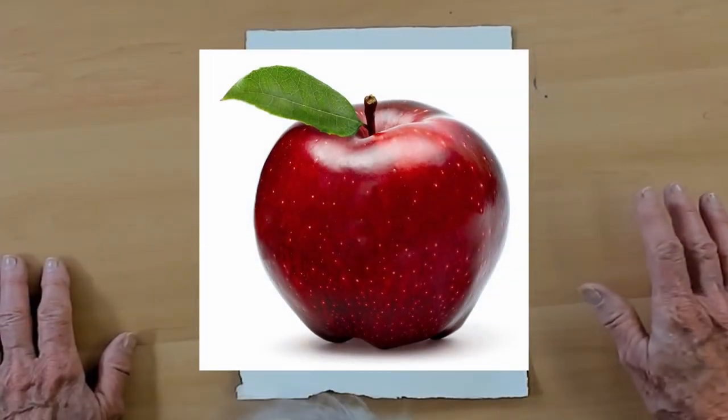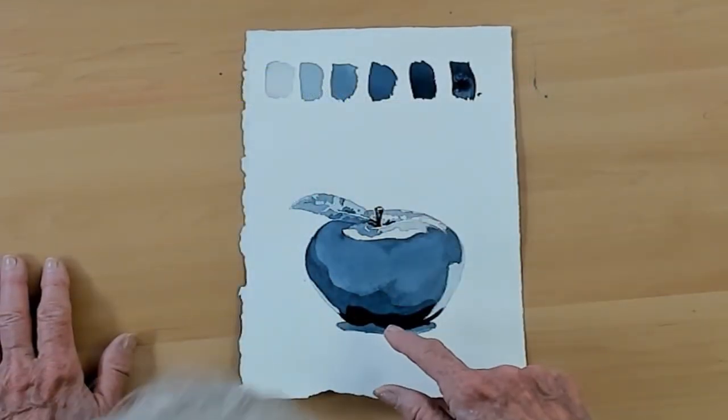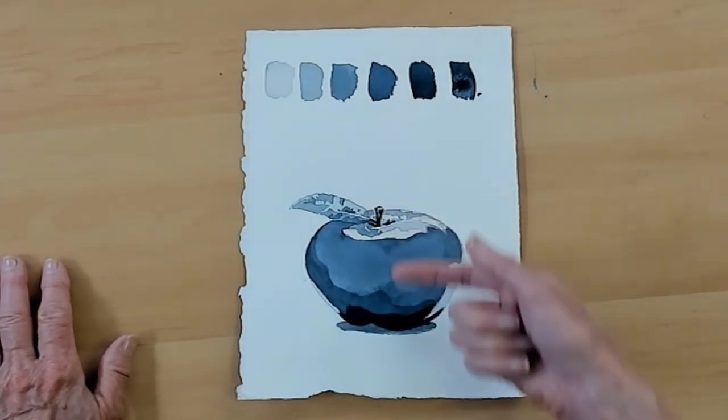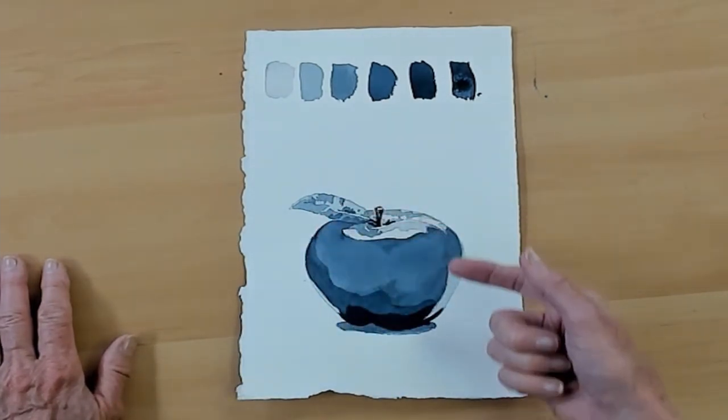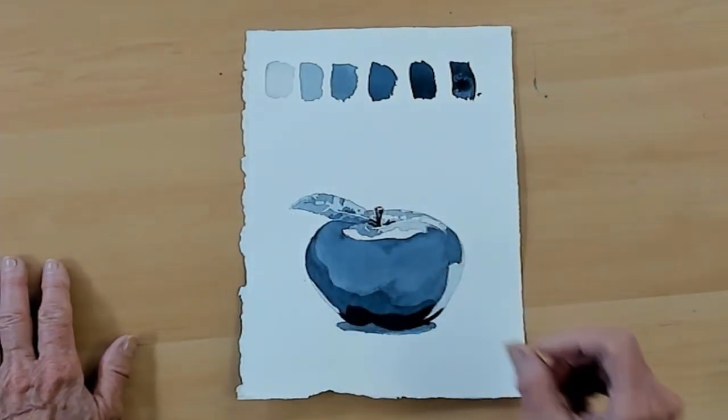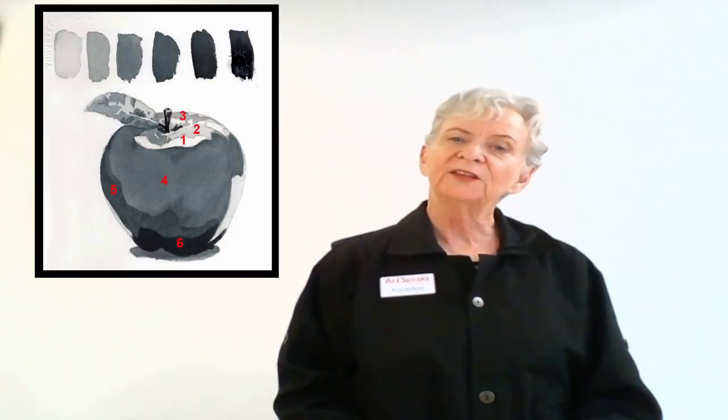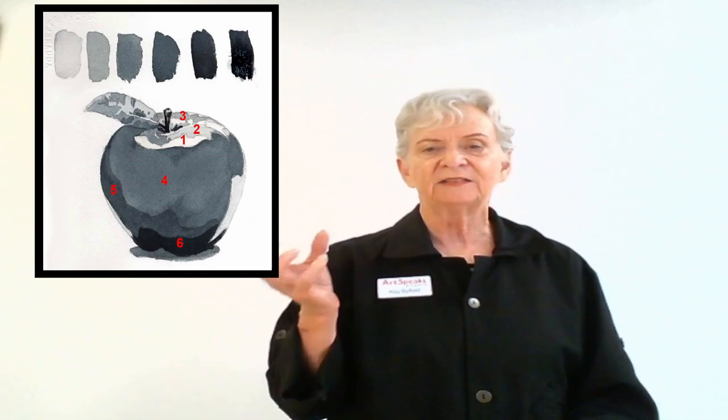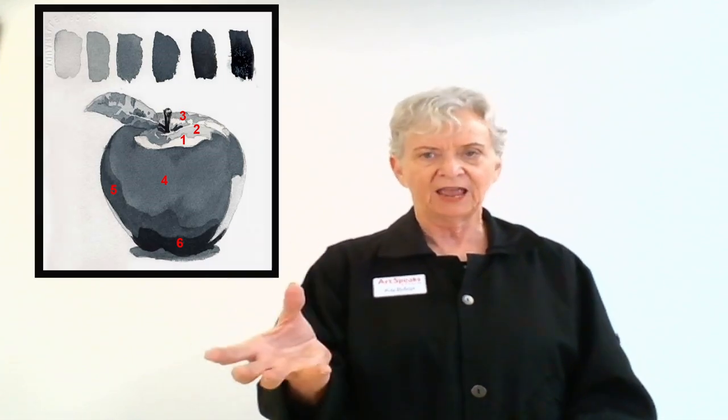Going back to our red apple, if I render that apple as a value study with hard edges and I know that these changes in value would be in most cases soft edges because this is a rounded form, using numbers one through six you can see how I laid these values out in the apple.